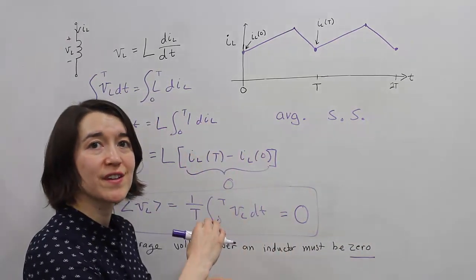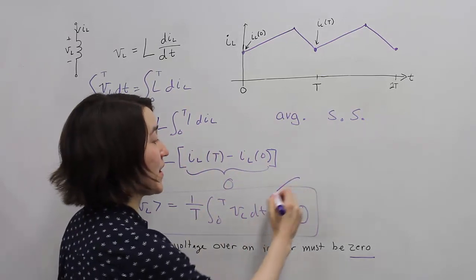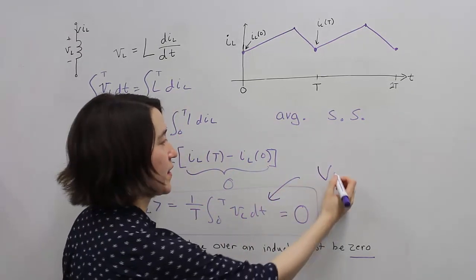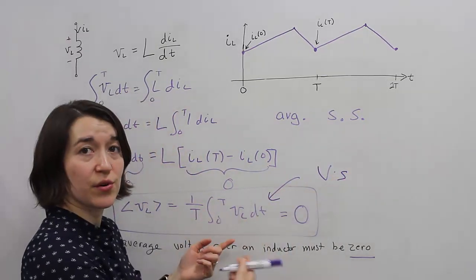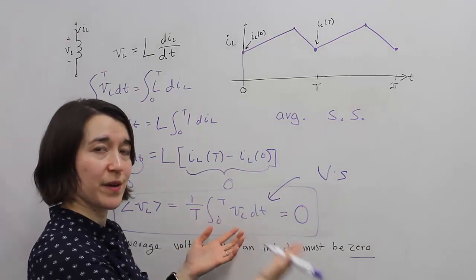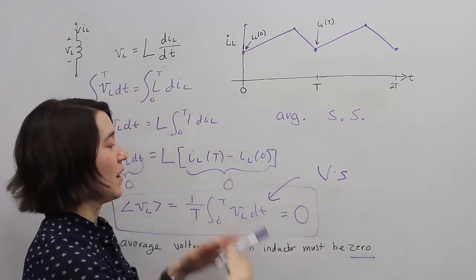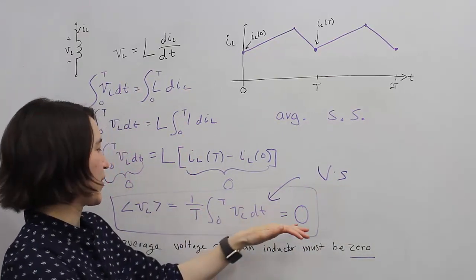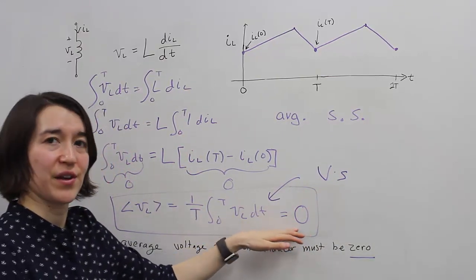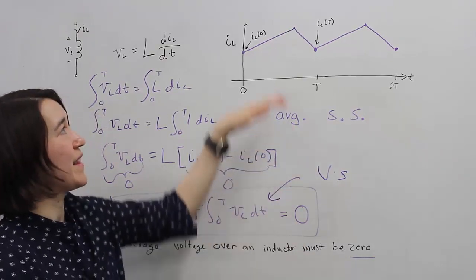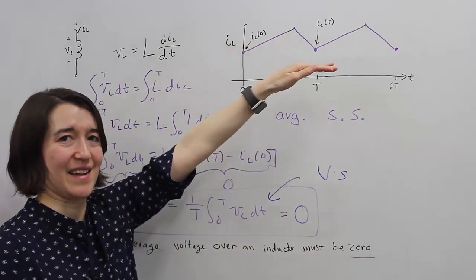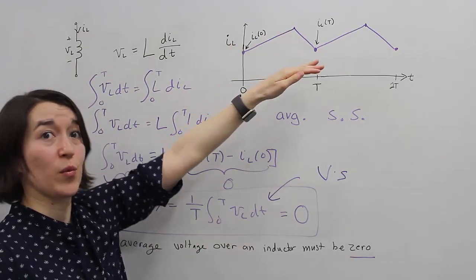The term volt second comes from the integral here. The volt seconds, because you're taking the integral over time, so you multiply the voltage by seconds. This expression, the volt seconds, must be balanced on each side positive and negative in order to ensure that this value is 0 and that the inductor stays at that nice steady state in normal operation.